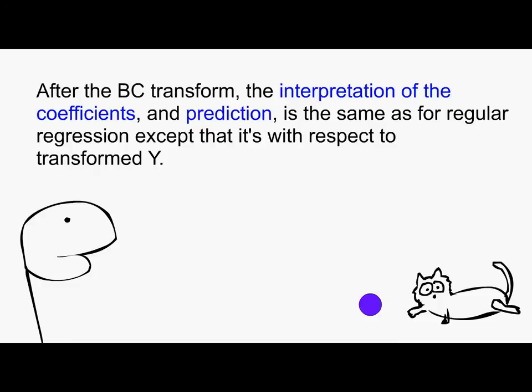After the BC transform, the interpretation of the coefficients and prediction is the same as for regular regression except that it is with respect to the transformed Y.